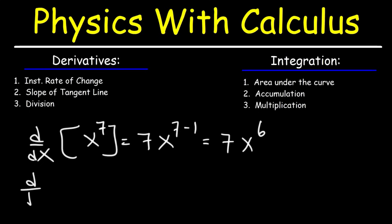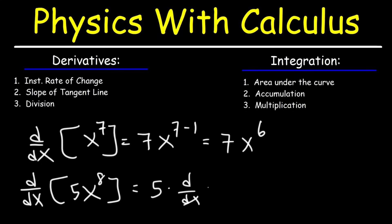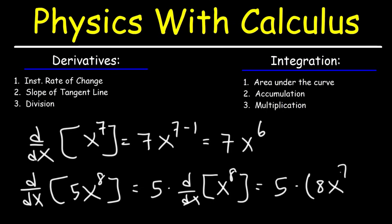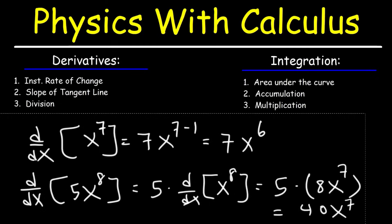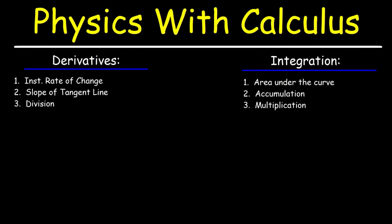What is the derivative of 5x to the 8th power? The 5 is just a constant, so this is 5 times the derivative of x to the 8th power. The derivative of x to the 8th is 8x to the 7th. 5 times 8 is 40, so the final answer is 40x to the 7th power. That's a quick and simple way to find the derivative of a function.